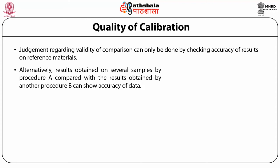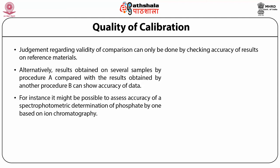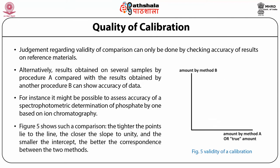Results obtained on several samples by procedure A can be compared with the results obtained by another procedure B, which is based on a completely different measuring principle. For instance, it might be possible to assess the accuracy of a spectrophotometric determination. Figure 5 shows such a comparison — the tighter the points lie to the line, the closer the slope is to unity and the smaller the intercept, the better the correspondence between the two methods. The validity of a calibration can be assessed by a method comparison exercise if both procedures are based on independent principles or on standard reference materials where reliable true values are available. Validity is the ultimate and crucial property in any calibration.